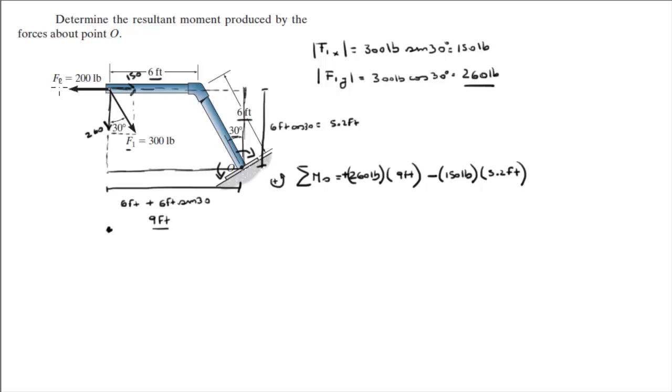And the last force, which is F2, is making this lever arm go counterclockwise, which means that it's positive. The magnitude is 200 pounds, and the length of the lever arm is, again, 5.2 feet.